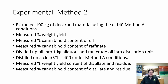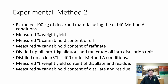In Method 2, we also extracted 100 kilos — actually the exact same material used in Method 1, the exact same lot, a homogenized material. We measured the weight yield, the cannabinoid content, and the content of the raffinate. Then we divided that up into 1-kilogram aliquots and ran them directly into the distillation unit with the ClearStill 400 under Method A standard conditions, measuring the percent weight yield, residue, percent cannabinoid yield, and distillate residue.